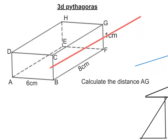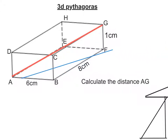AG is this length here from the bottom left-hand corner, A, to the top right-hand corner, G, and it's going through the centre of this box. Now, I can't work that out straight away, but what I can do is if I work out what AF is — that's the diagonal across the base of the box — I can then form a right-hand triangle with that, and with GF, and we can work out the length AG.